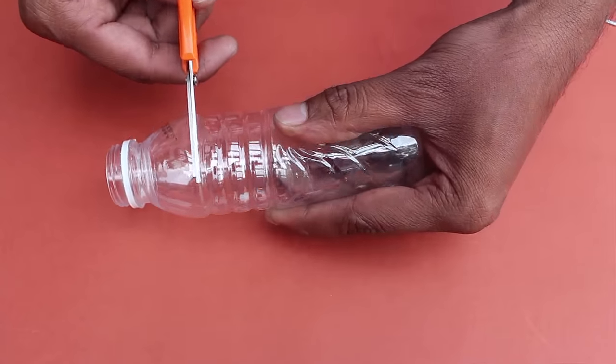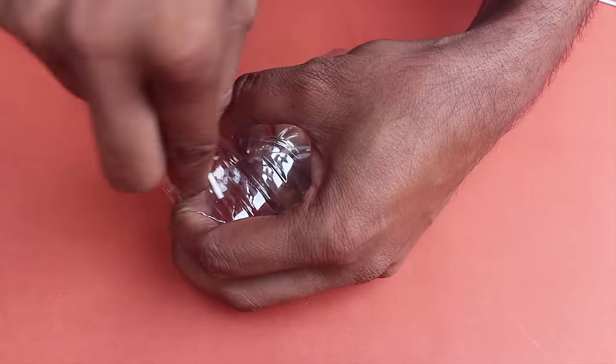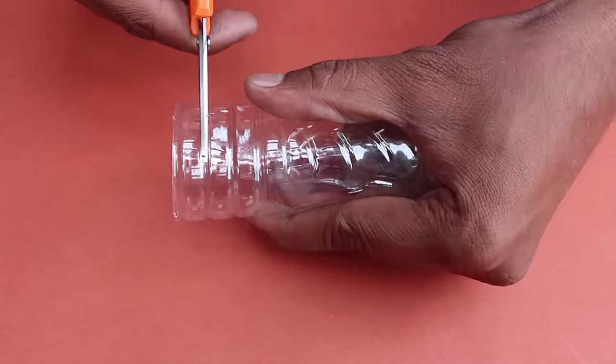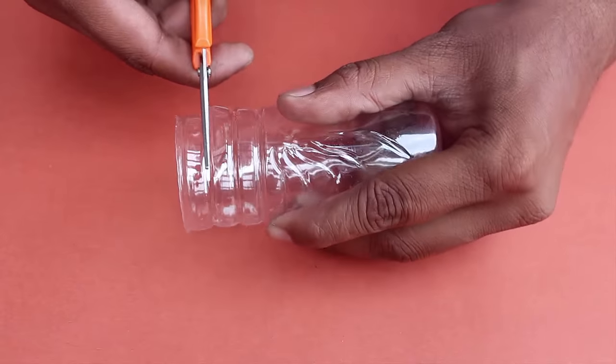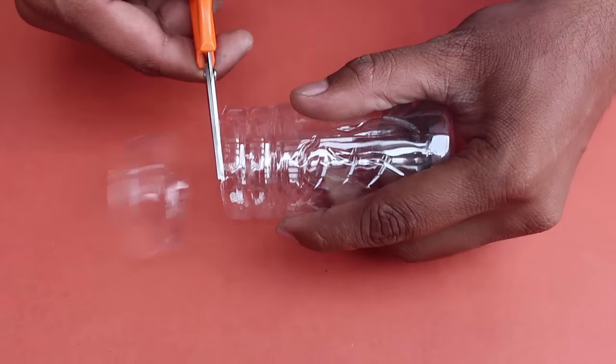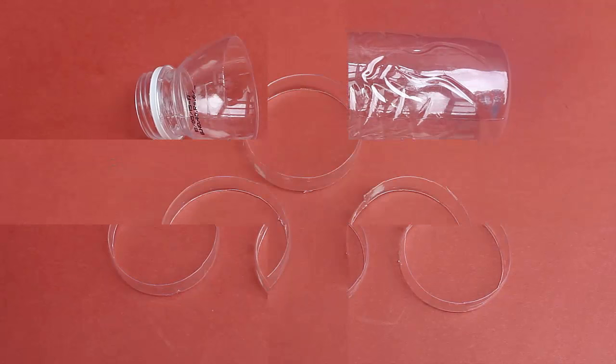Cut all three rings that you see on the small 250 ml bottle. They will look like transparent plastic hoops, and it's quite easy to cut these rings because the plastic is very soft.